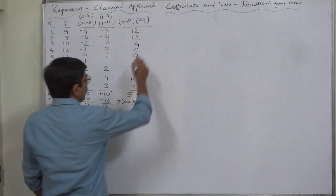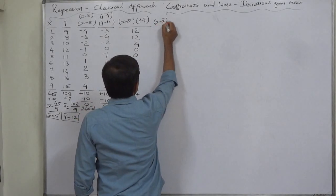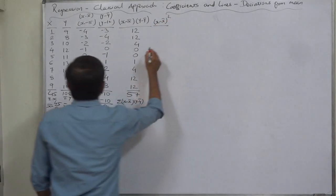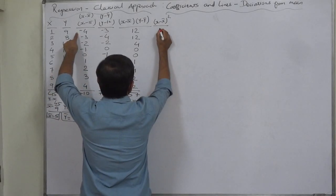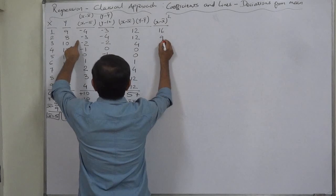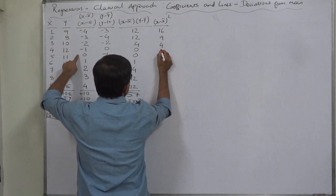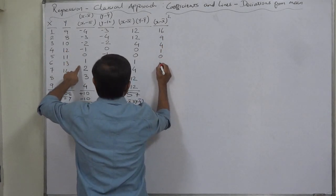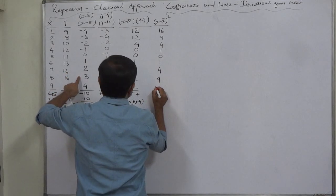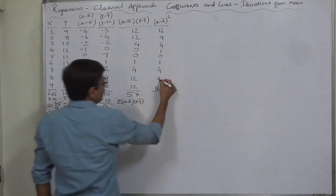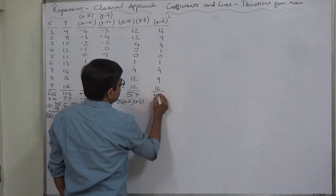For the column (x - x̄)², we square each deviation: 1²=1, 2²=4, 3²=9, 4²=16. The sum is 16+9=25, +4+1=30, +30=60 on both sides, giving Σ(x - x̄)² = 60.